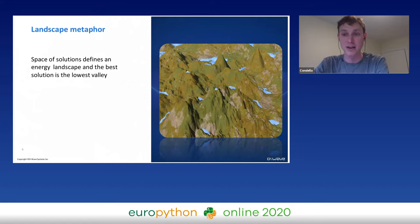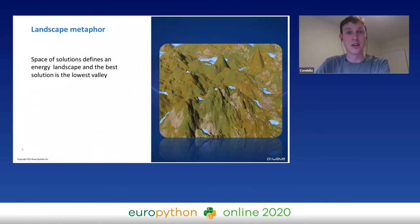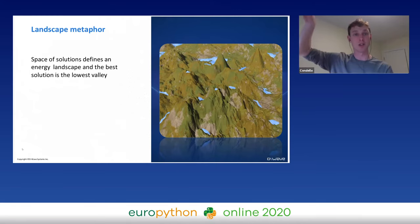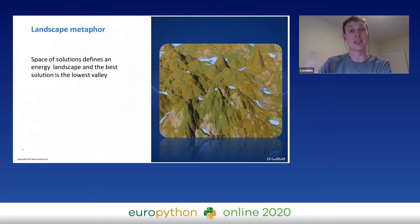The metaphor we often use when talking about solving problems with our system is the so-called landscape metaphor. Imagine you are on a landscape where the height of various parts — the hills and valleys — represents the quality of your solution. The problem we're trying to solve is to find the lowest space on the landscape, which corresponds to the best quality solution. The value that quantum computing brings is its ability to tunnel through energy barriers to jump into other valleys in a way that a classical computer can't.